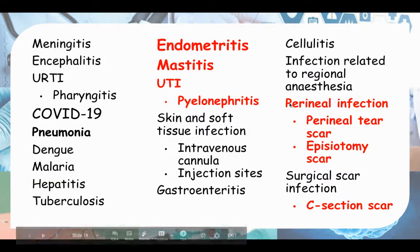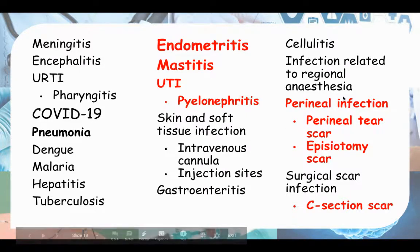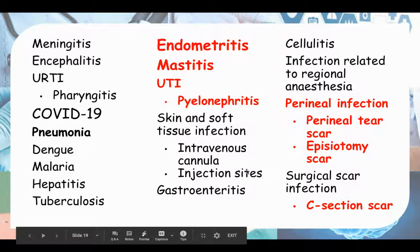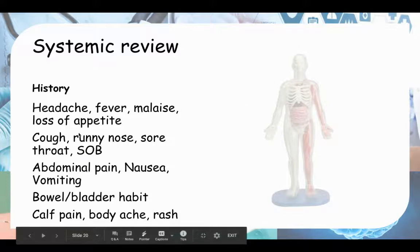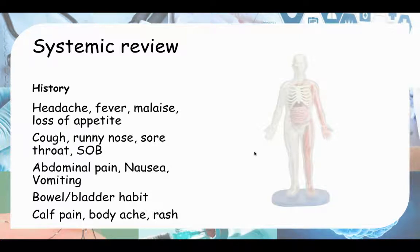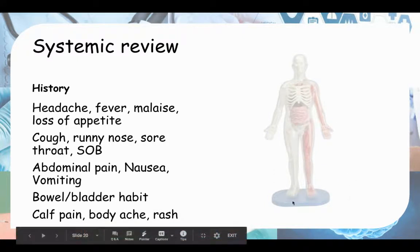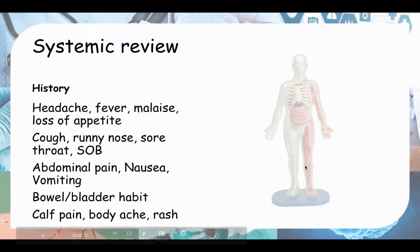For the rest of the differentials — we've covered endometritis, mastitis, UTI, perineal infection, and C-section scar. For the remaining ones, in history you need to ask your systemic review — go head to toe: headache, fever, malaise, loss of appetite, cough, runny nose, sore throat, shortness of breath, abdominal pain, nausea, vomiting, changes in bowel and bladder habit, body ache, and rash.